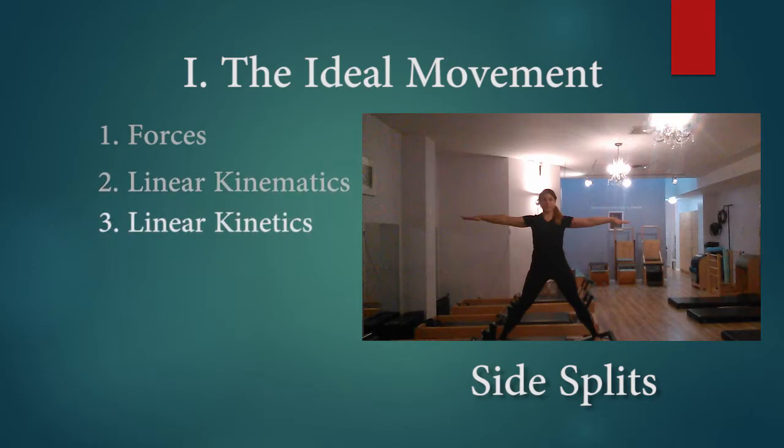McGinnis, 2007, noted that linear momentum is the product of an object's mass and its linear velocity. The faster an object moves, the more momentum it has. This momentum can be a safety factor in this exercise.